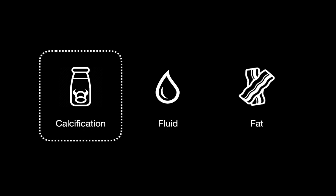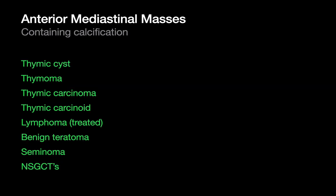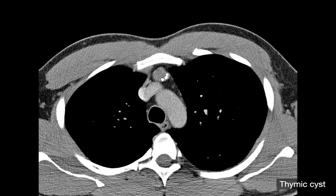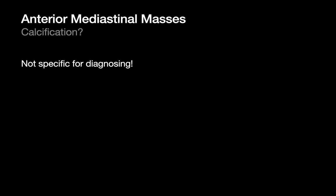Let's see how good calcification is. Calcification can occur in half the things on our list of anterior mediastinal masses. What's more concerning is that the pattern of calcification when it occurs in an anterior mediastinal mass is actually not that helpful — there aren't many specific calcification patterns. For example, an anterior mediastinal mass with a few eccentric small calcifications could be a thymic cyst or a thymic carcinoma, so calcification is not all that helpful for rendering a specific diagnosis.